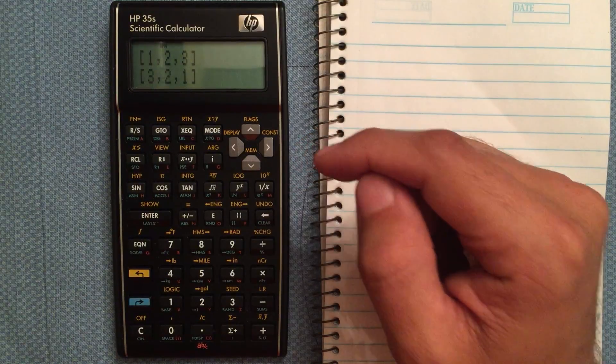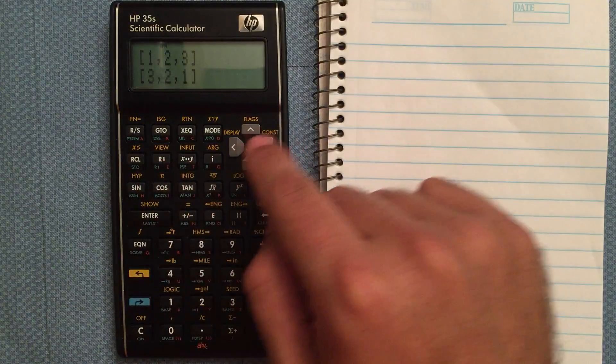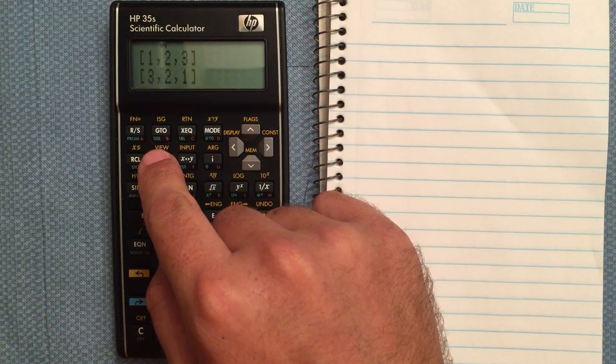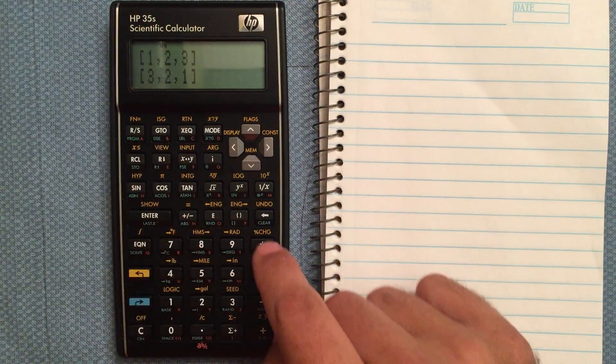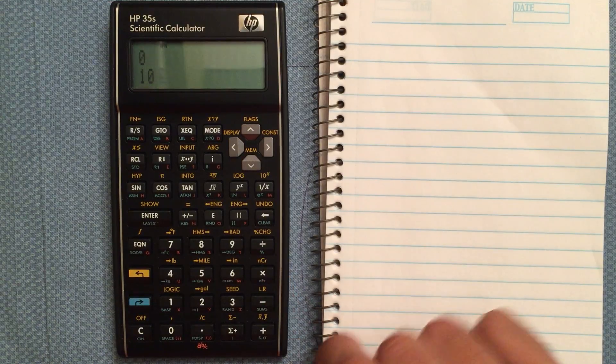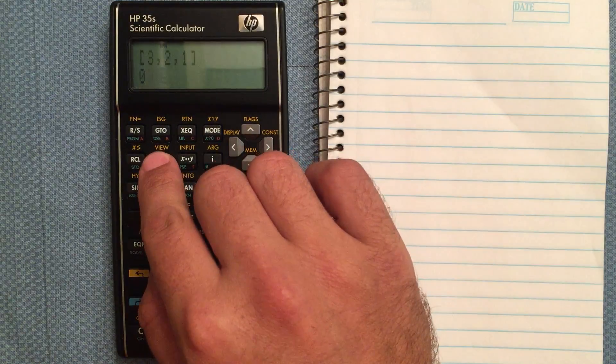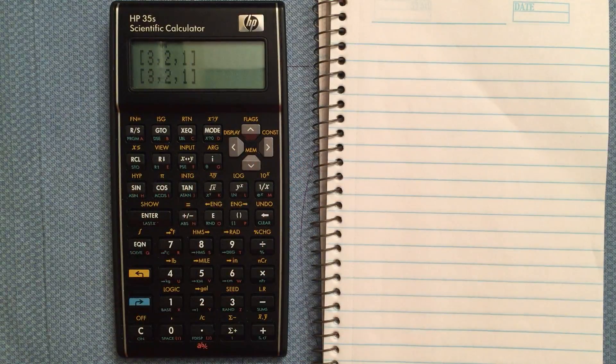Now if I want the dot product of these vectors, I can just hit the multiply button and that gives me the dot product.